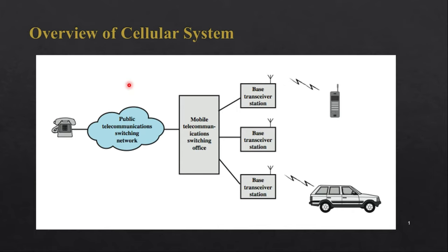Let us start with an overview of the cellular system. In a cellular system, we have a cell phone, also called a mobile phone, and this mobile phone is connected to a BTS, or base station — basically our mobile tower. These are connected with the help of radio resources, and many BTS units are connected to a mobile switching system.